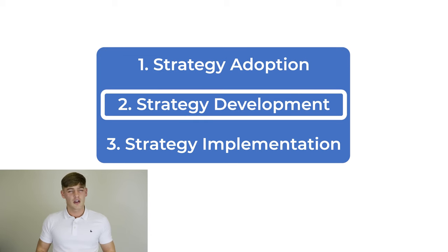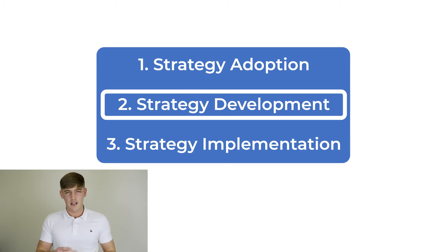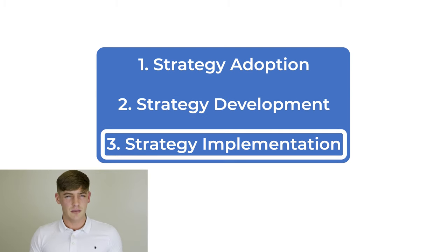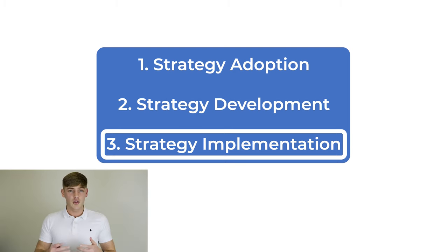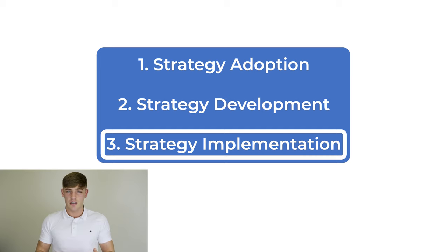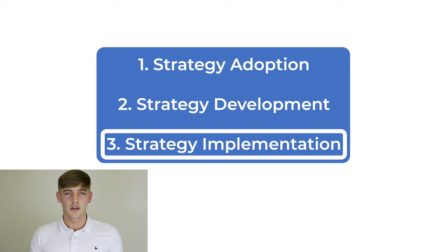The second step is strategy development, looking at exactly what type of goals and objectives you're going to try and achieve, as well as how your culture might align to these goals and objectives. Strategy implementation is very important because many business leaders either leave this out or fail to implement it correctly. You really want to think about how you're going to set up key performance indicators to measure your success, and you may want to create a roadmap for implementation to ensure you're on track and progressing in the right direction.